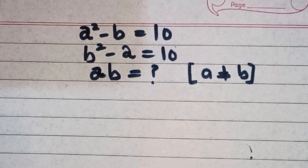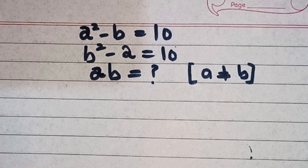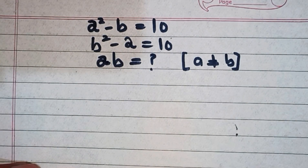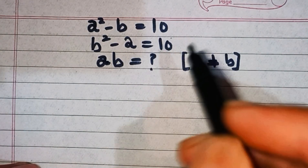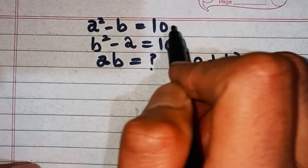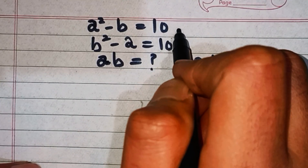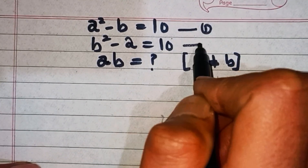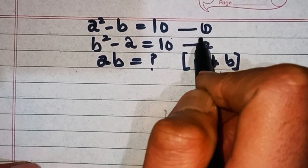Hi everyone. We have given a² - b = 10 and b² - a = 10. We have to find the value of ab. Remember, a is not equal to b. Let's make this equation number one and this is equation number two.